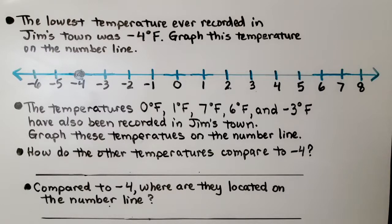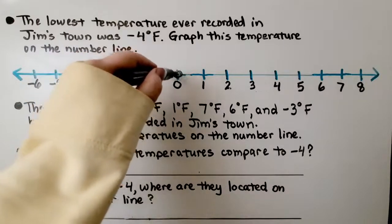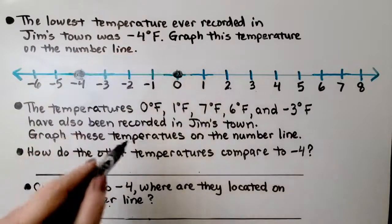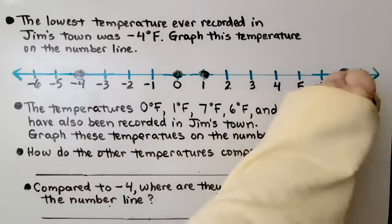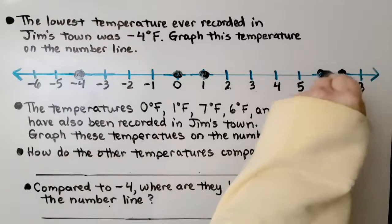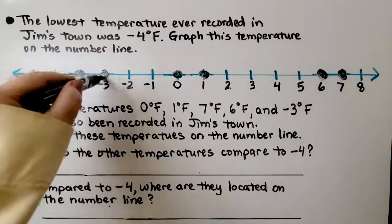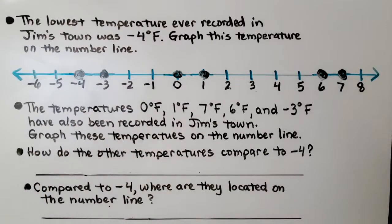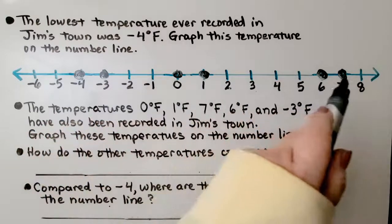Graph these temperatures on the number line. We have zero — put a point there. We have one degree, seven degrees (way over here), six degrees, and negative three degrees, which is over here near negative four. How do the other temperatures compare to negative four? They're all greater than negative four.